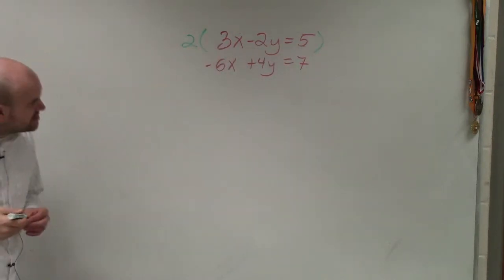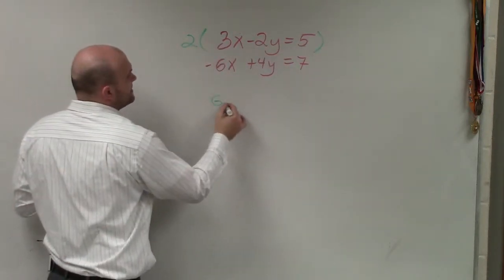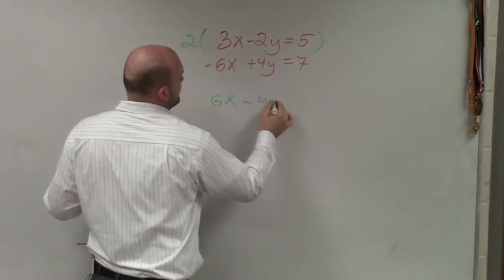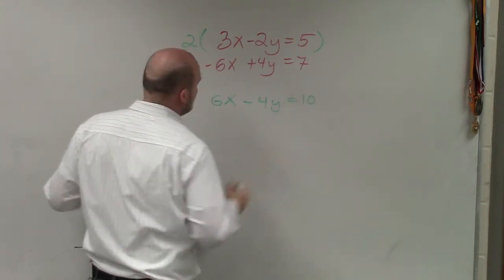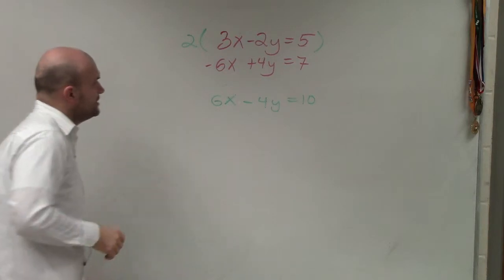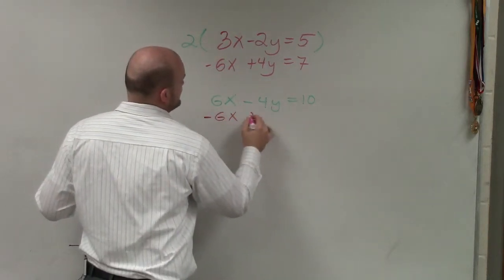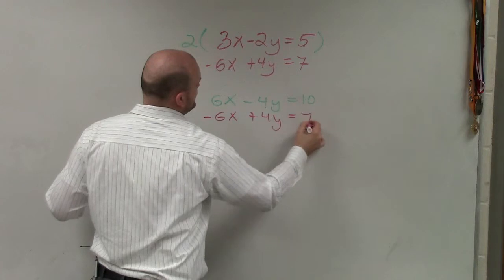So I multiply the top equation by 2. And when I do that, I obtain 6x minus 4y equals 10. And then my bottom equation is going to remain the same, negative 6x plus 4y equals 7.